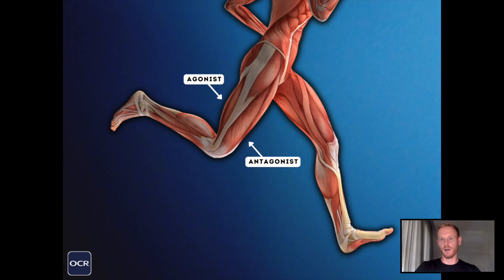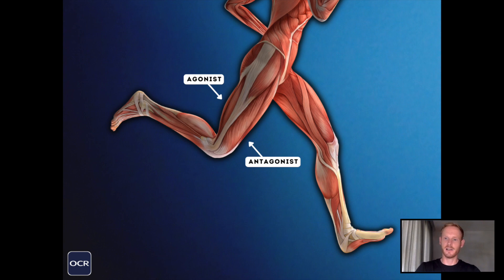In this example we have flexion at the knee joint. The muscle that creates flexion at the knee is the hamstring, so that one is the agonist. The muscle opposite, which must relax to allow flexion at the knee joint to occur, is the quadricep muscle — so that one is the antagonist.